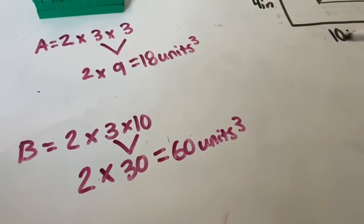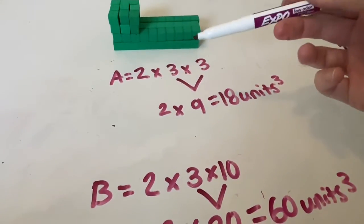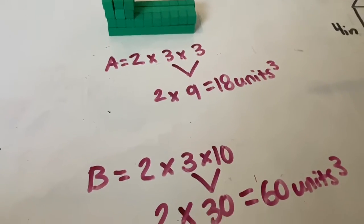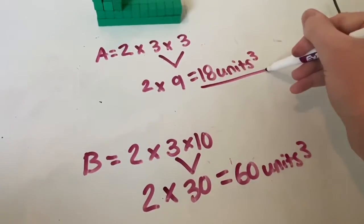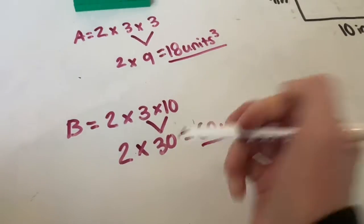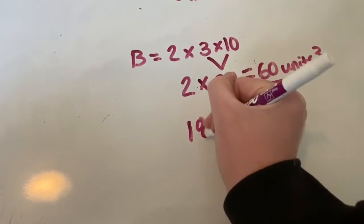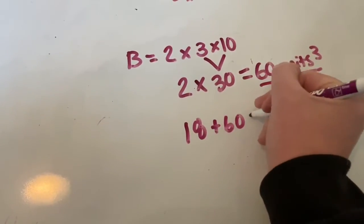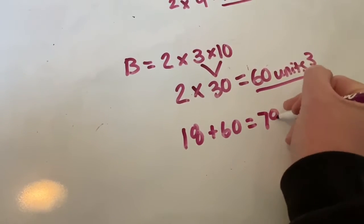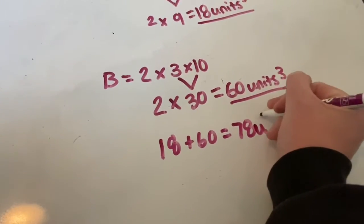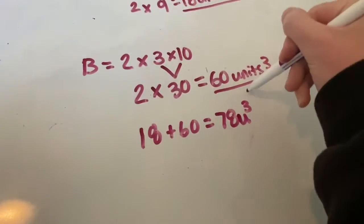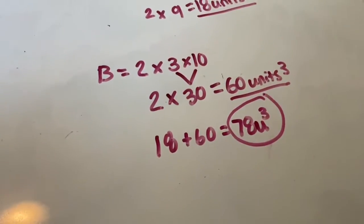Now if we're wondering what is the composite volume or the volume of both figures together, we are going to add 18 units cubed plus 60 units cubed. And we will end up with 78 units cubed. That will be our final answer for the composite volume.